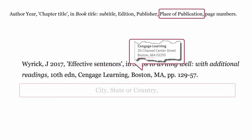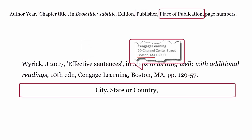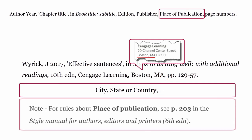Place of publication: where the publisher is based. This is formatted using the city, then a comma, then the state or country, followed by a comma. For rules about place of publication, see page 203 of the Style Manual for Authors, Editors, and Printers, 6th edition.